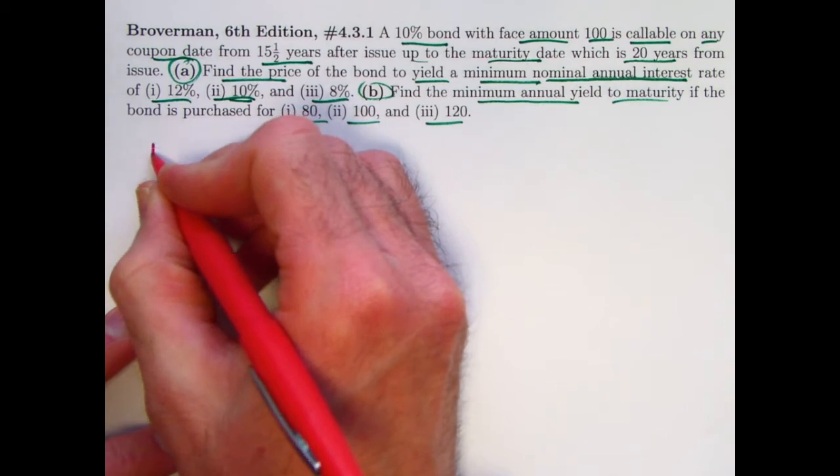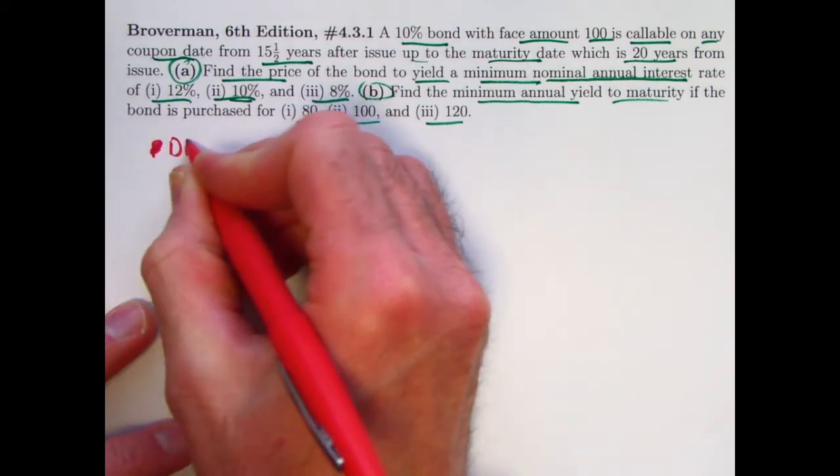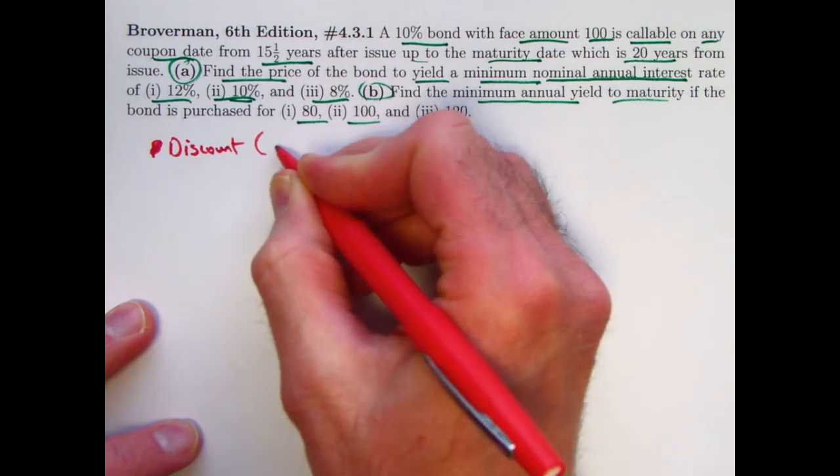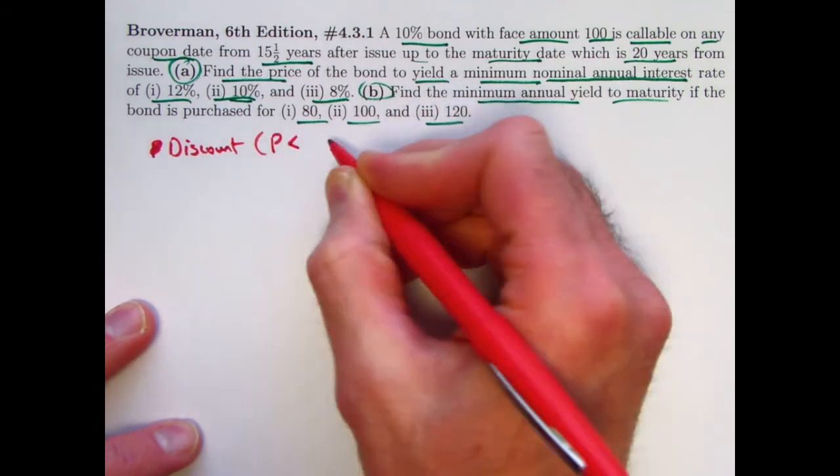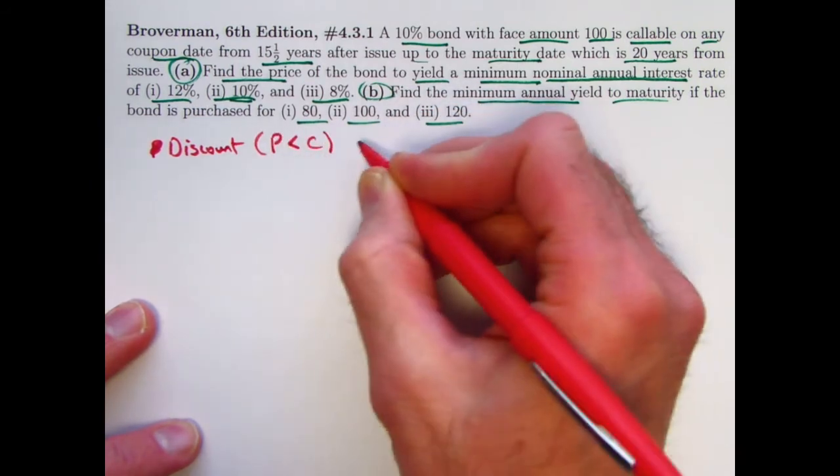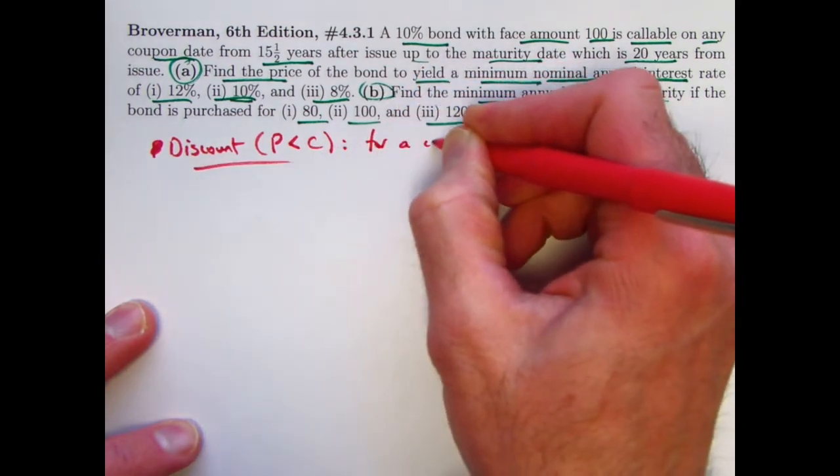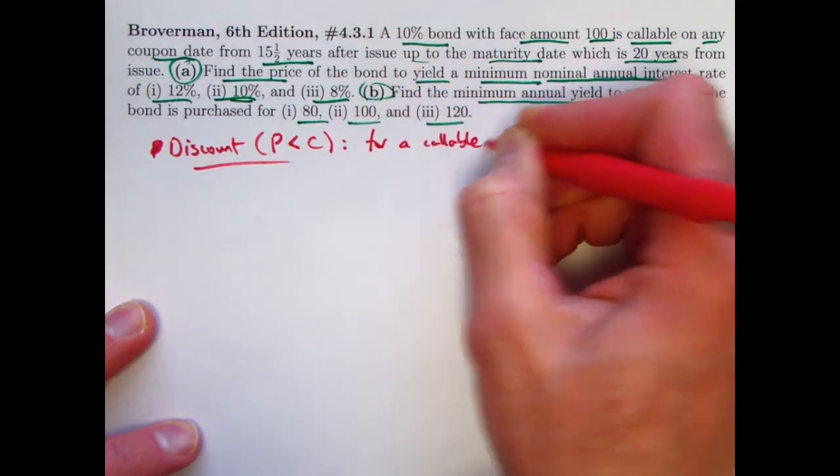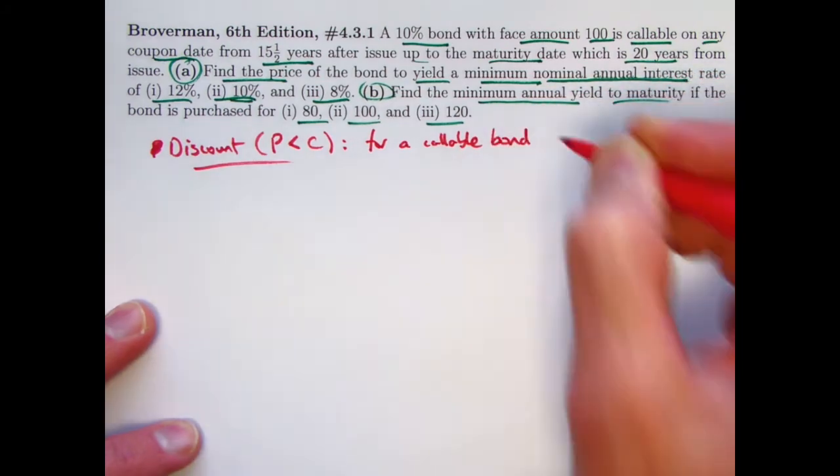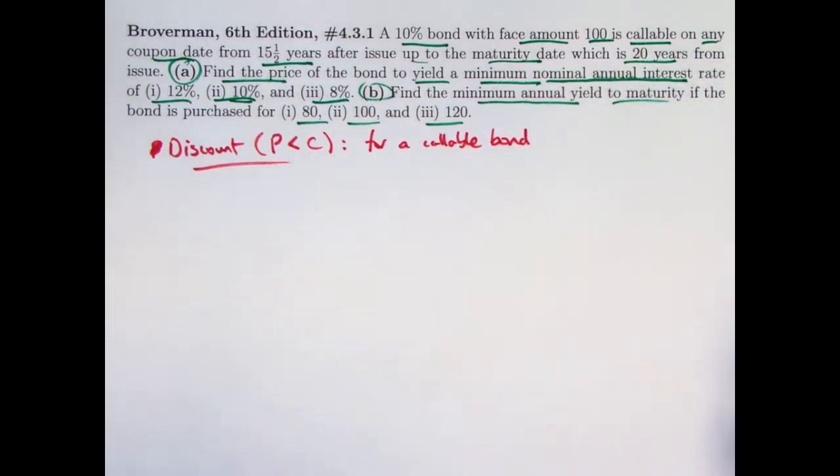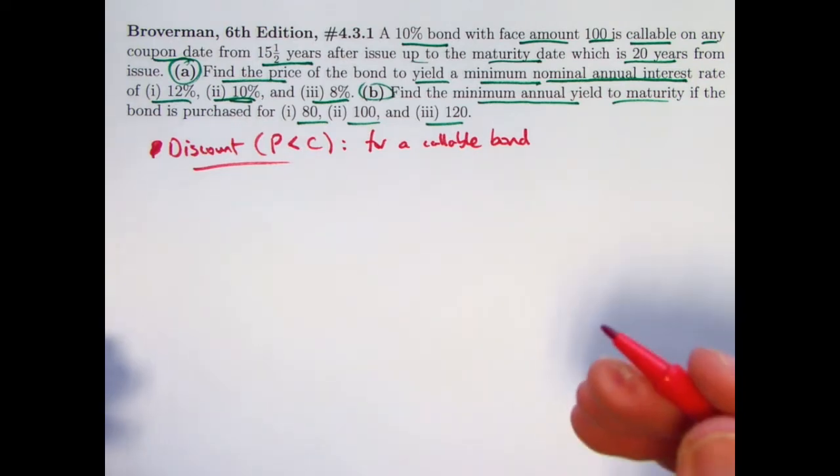So first of all, what if the bond is bought at a discount? In other words, P, the price is less than C, the redemption amount. For a callable bond, what you need to do is you need to assume the worst case scenario for you, the investor. That's the key concept you should think about to help you solve these problems.